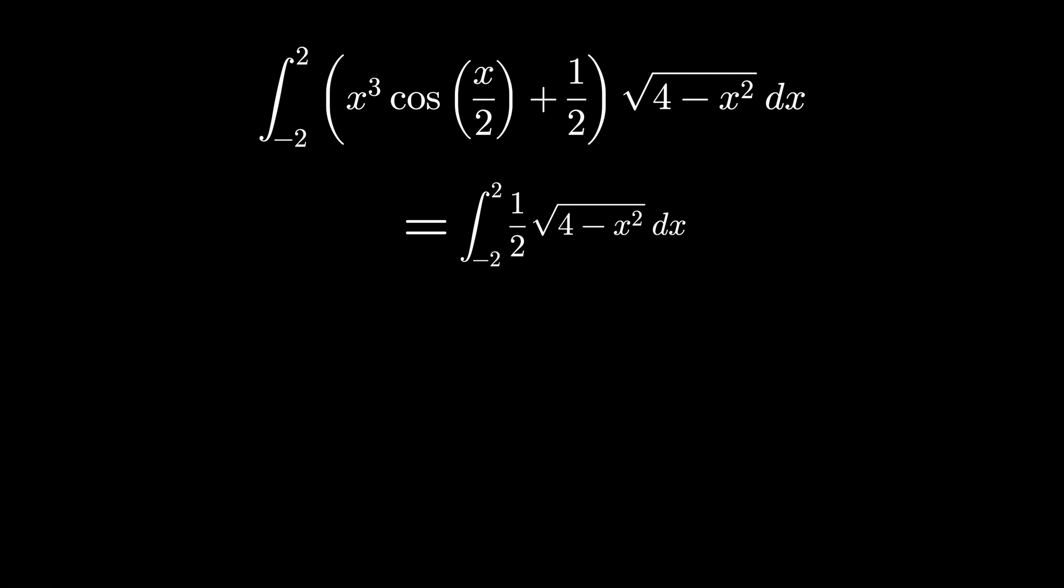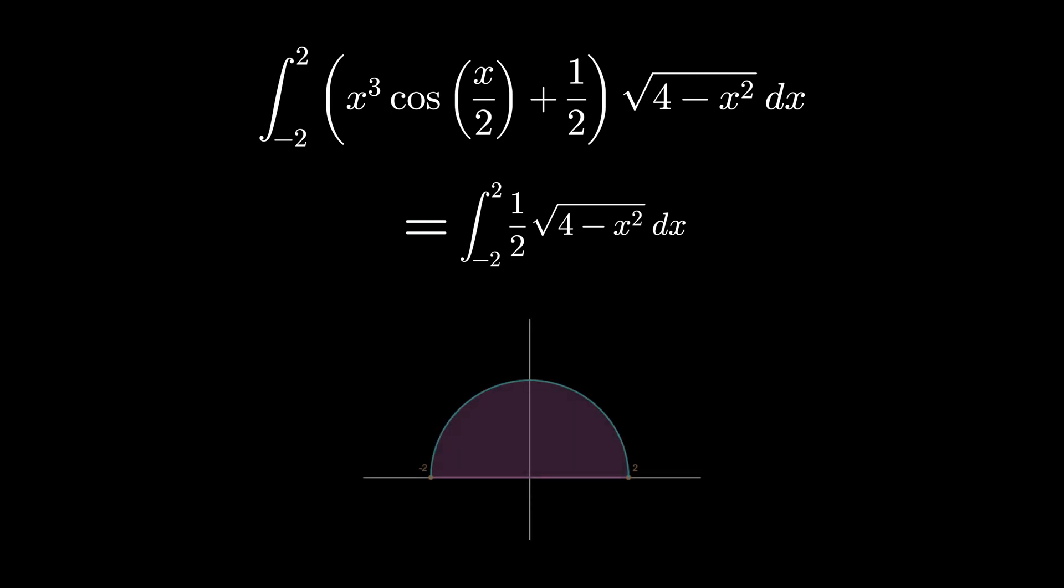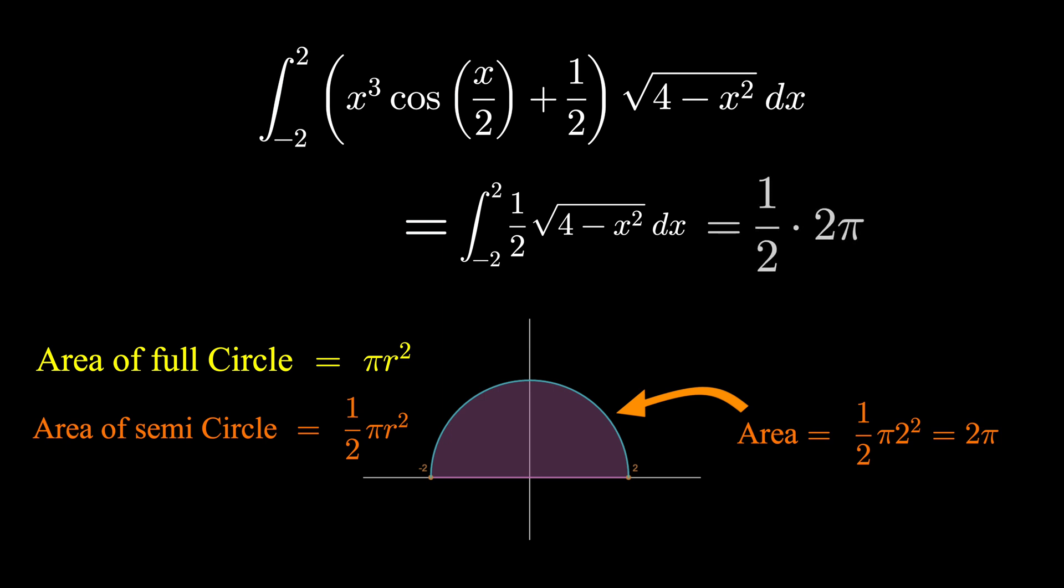So, integrals are just area under the curve, and this function happens to be a semicircle of radius 2, so all we need to do is compute the area of this semicircle, multiply it by a half, and hey, wouldn't you know it, we're getting pi,